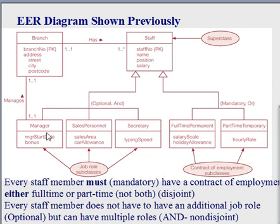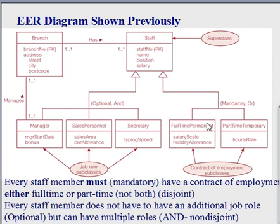They could be in one, and in fact 'and' means they could be in more than one. In this case, you have another subclass which is saying it's mandatory — you must be in one of these two. There's no way you could be in both. You can't be full-time and part-time together — that's impossible. It's mandatory to be in here, and you must be in one or the other; you can't be in both.